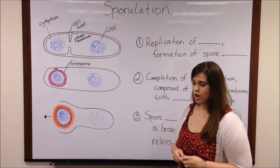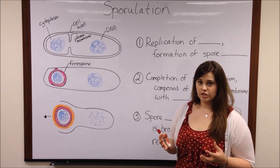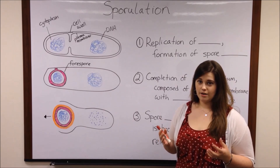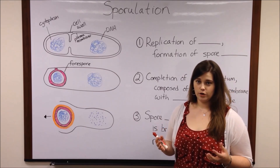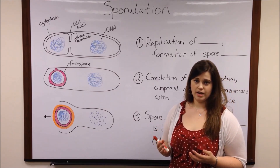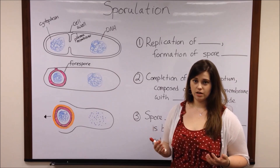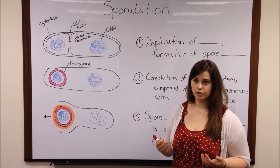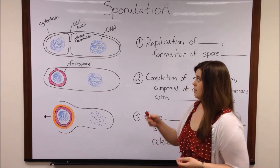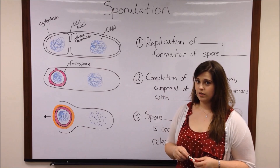Now, when environmental conditions become unfavorable — for example when the bacteria is experiencing some form of starvation or extreme temperatures — it may begin the process of sporulation.